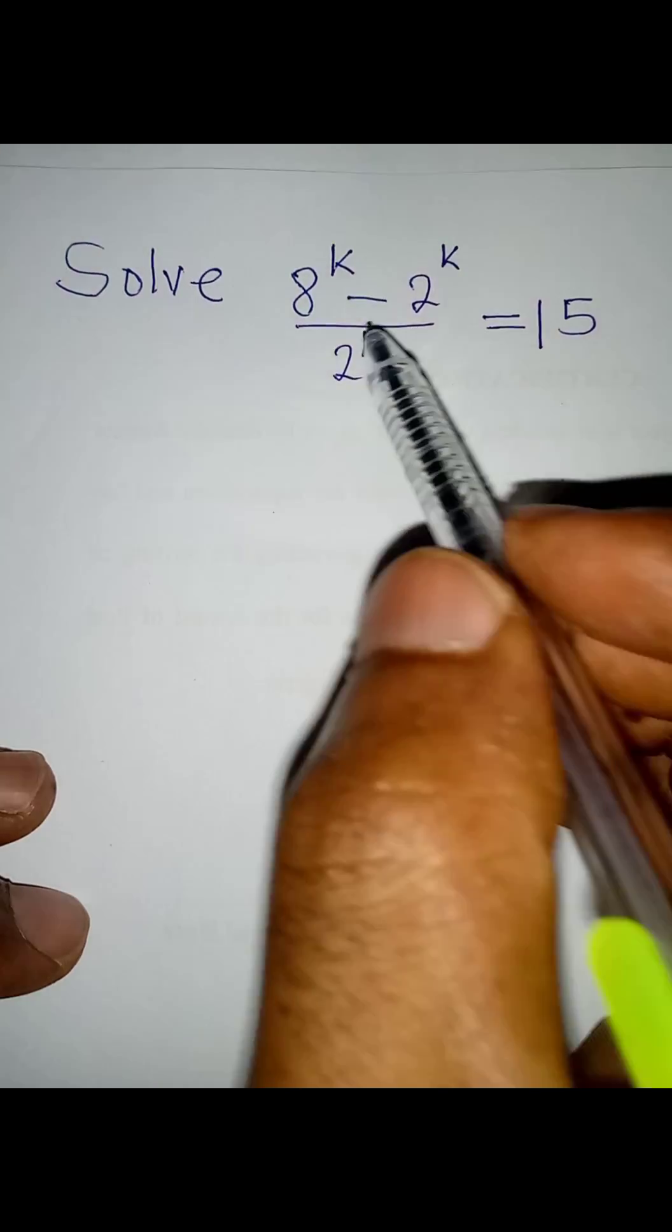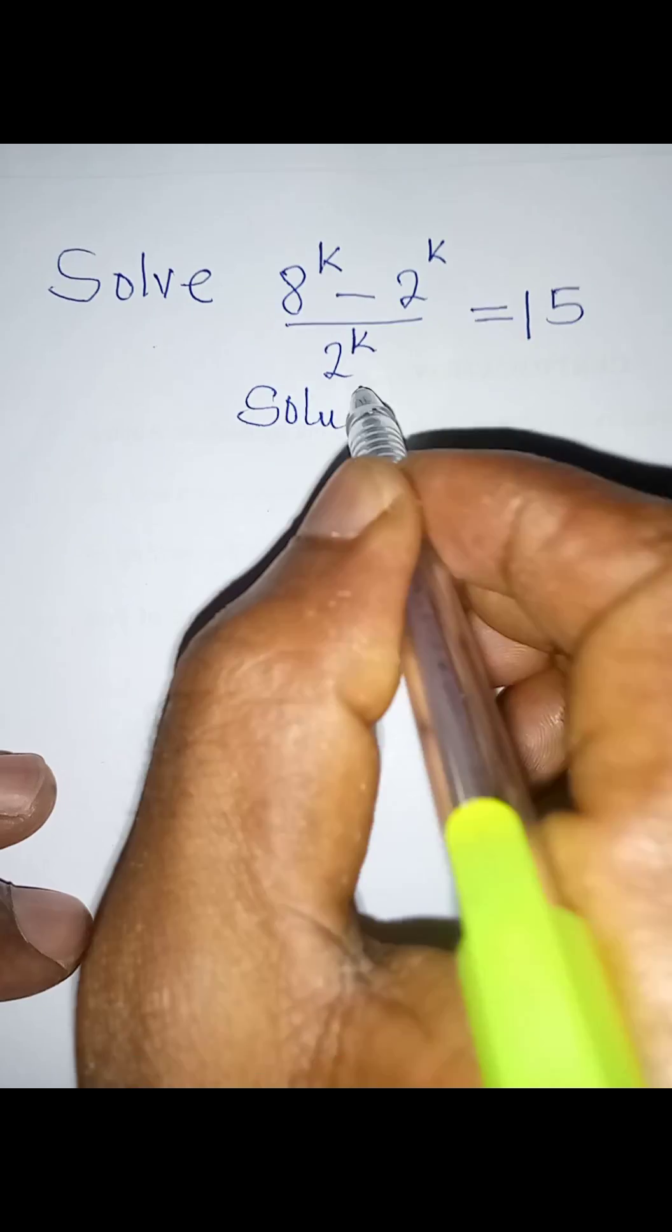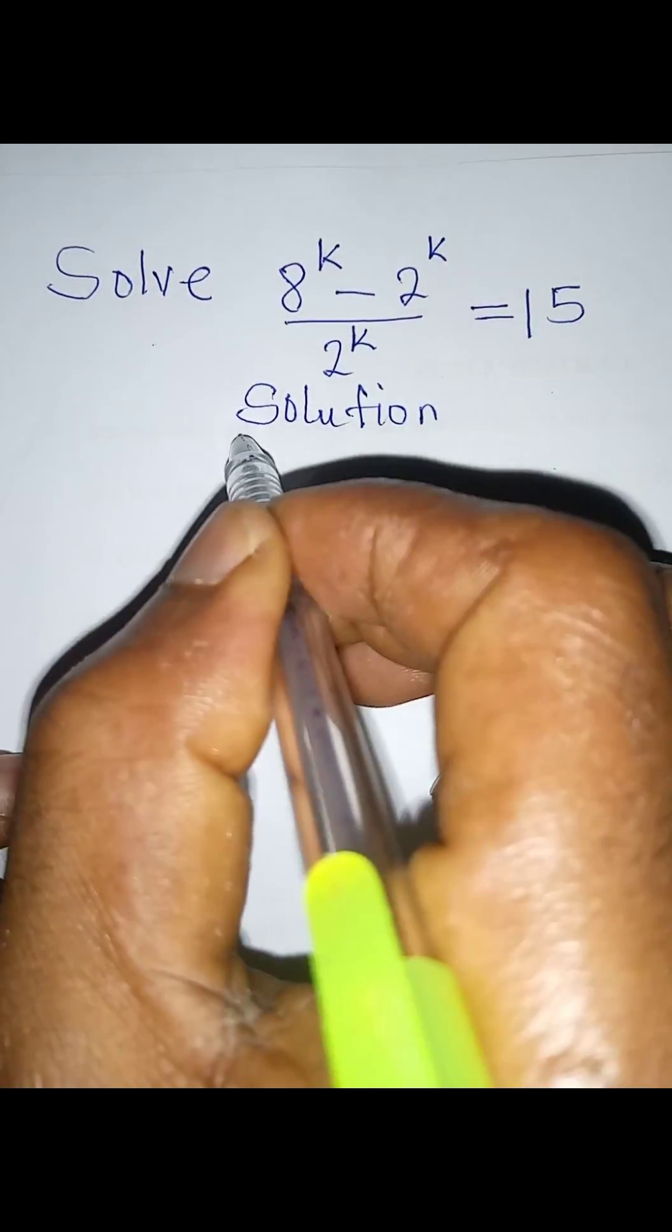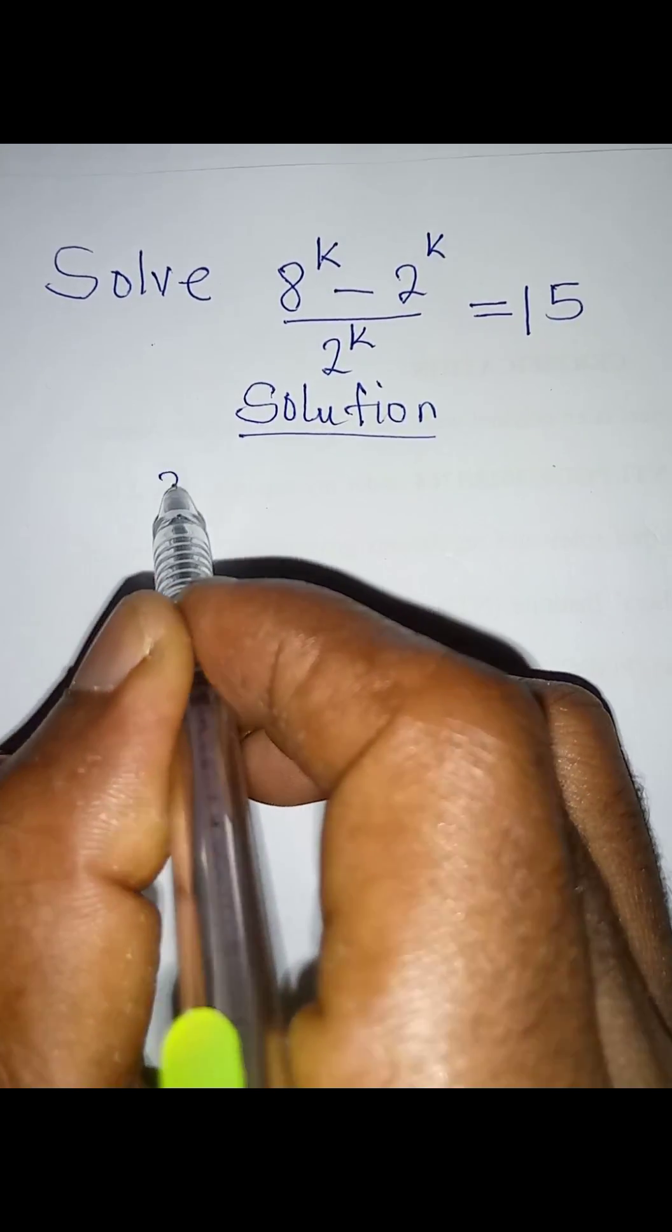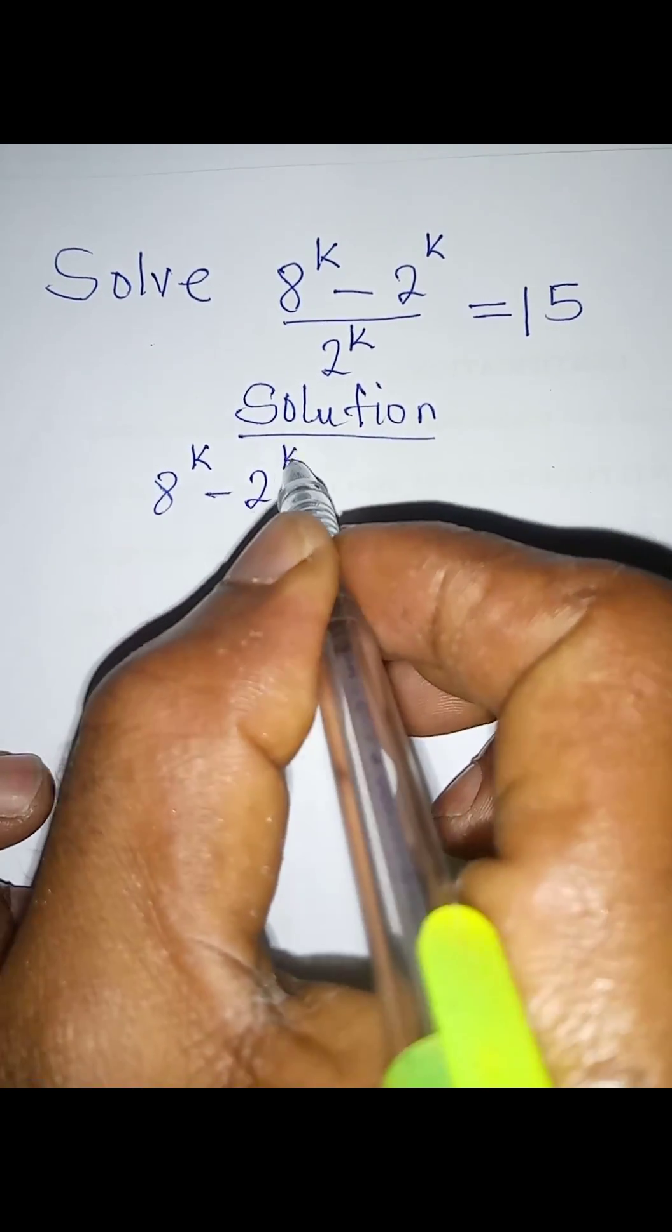Hello everyone, let's solve this problem very quickly. We have 8 to the power k minus 2 to the power of k all over 2 to the power k equals 15.